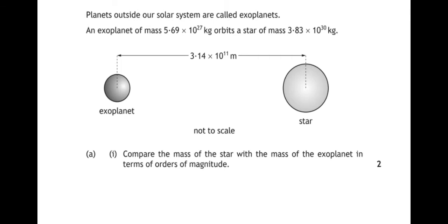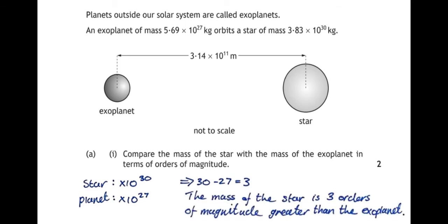Now, an order of magnitude is the times 10 to the power of bit. So, the star is of the order of magnitude 10 to the power of 30. The planet has an order of magnitude of 10 to the 27. What's the difference? Well, the star is 3 orders of magnitude bigger than the exoplanet.